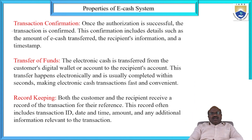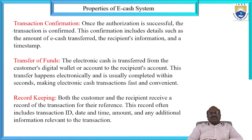Transfer of funds — how to transfer funds in a secured manner is also one of the properties. The electronic cash is transferred from the customer's digital wallet or account to the recipient's account. This transfer happens electronically and is usually completed in seconds, making electronic cash transactions fast and convenient. Transaction of funds is a most important property of the e-cash system. And record keeping — storing and retrieving data is also an additional property in the e-cash systems.